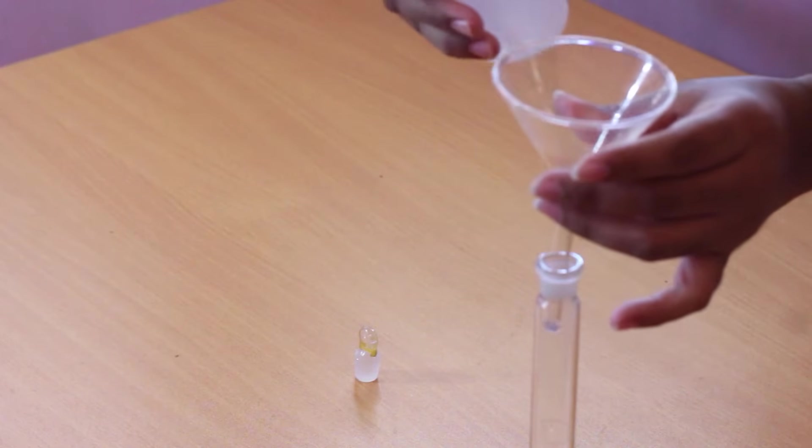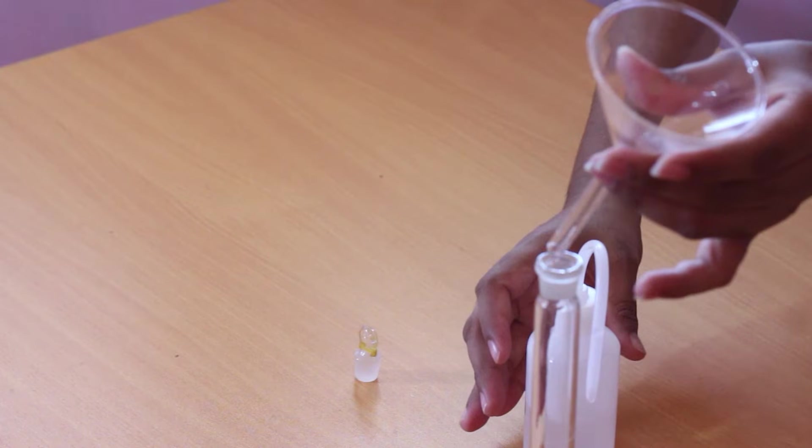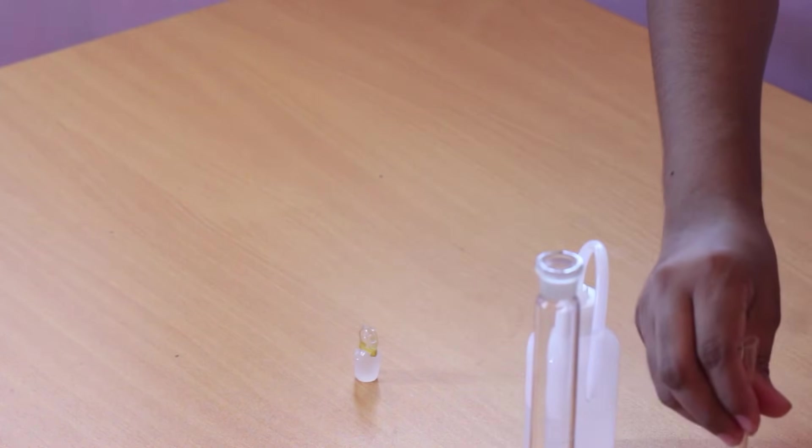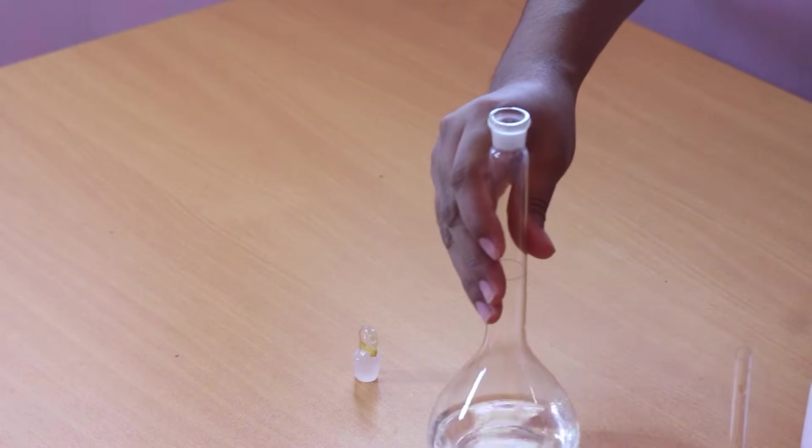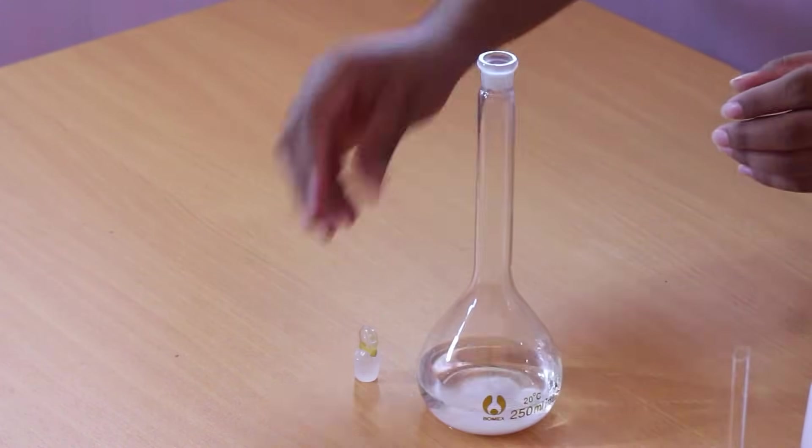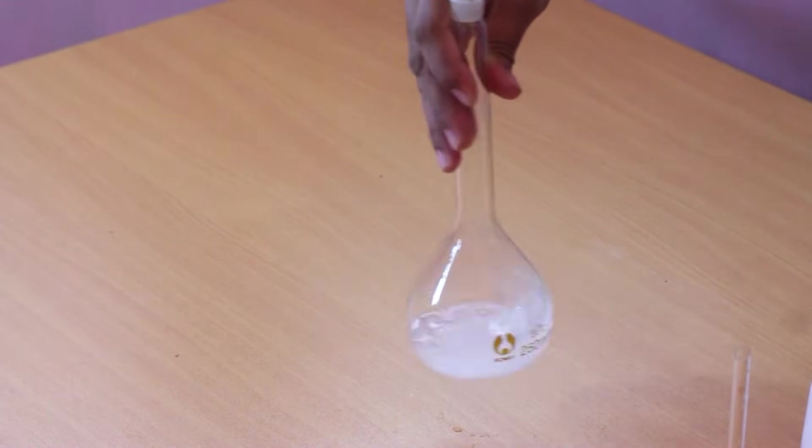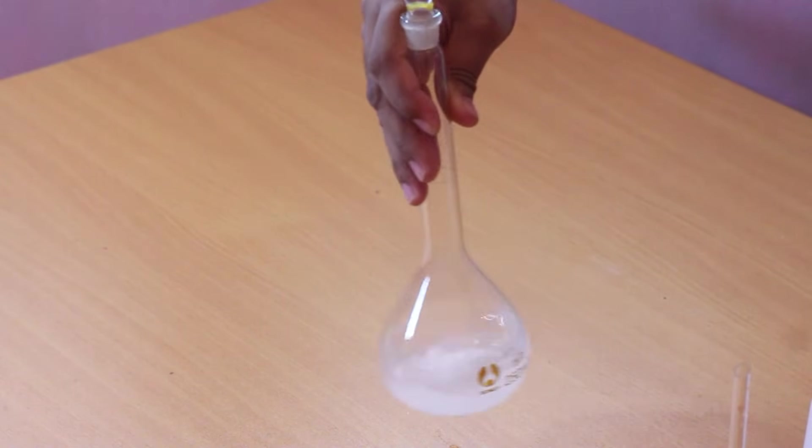Now we remove the funnel from the volumetric flask. Now the volumetric flask is filled roughly two-thirds of its volume. It is easy to mix the solution when the volumetric flask is partially filled. We shake the volumetric flask so that the sodium chloride solution mixes well.